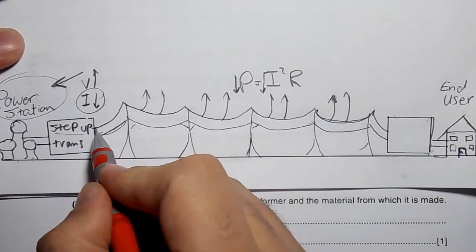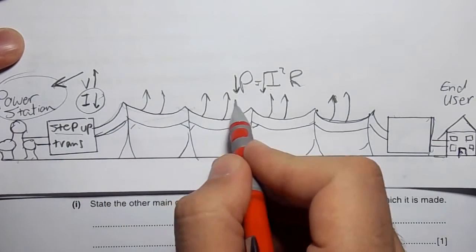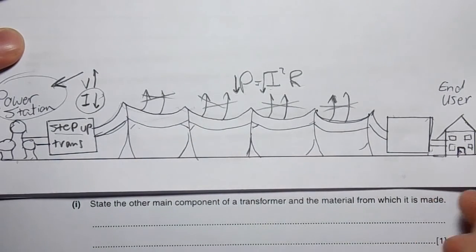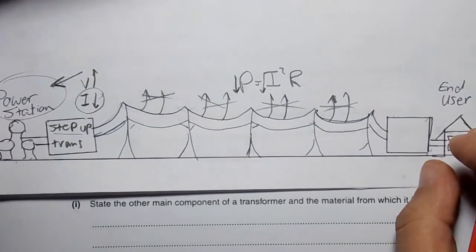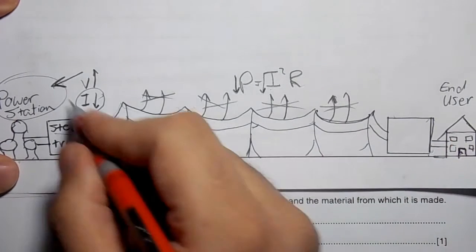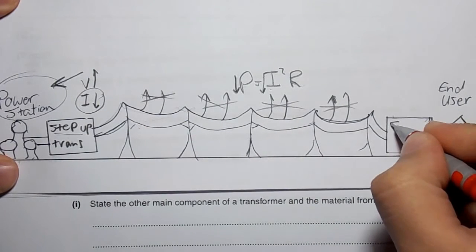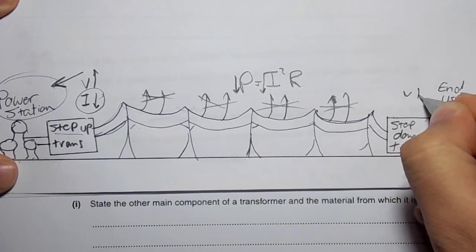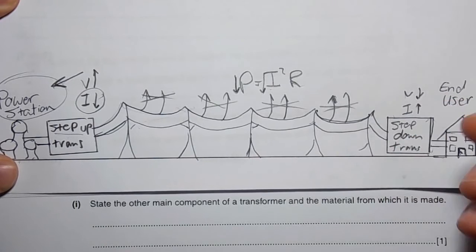Therefore, electricity travels as you see with low current. So there won't be heat loss. The electricity reaches my house well. By the way, before my house, I can't have high voltage, so before the house we place a step-down transformer which lowers the voltage and raises the current again to values suitable for the house.